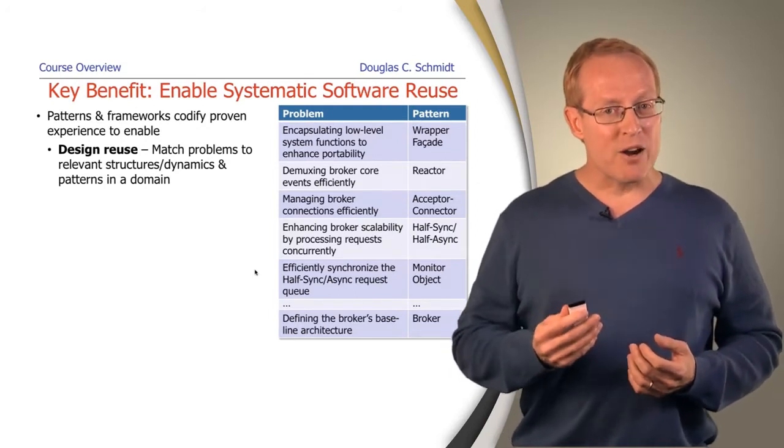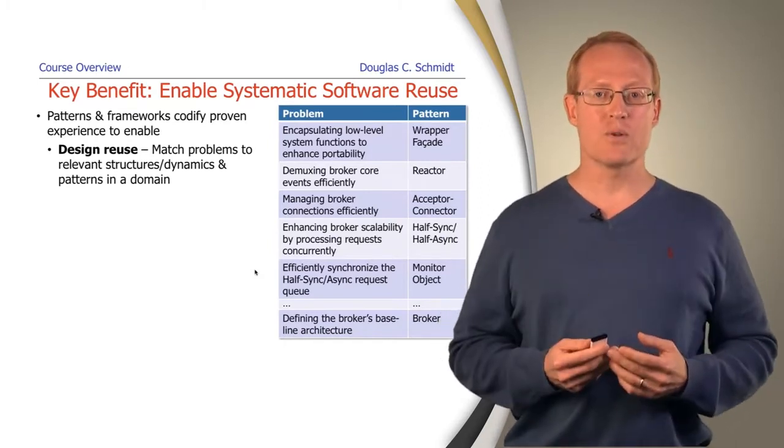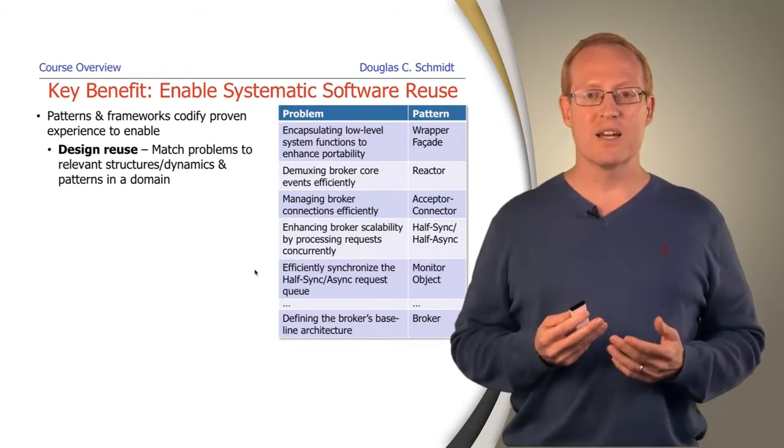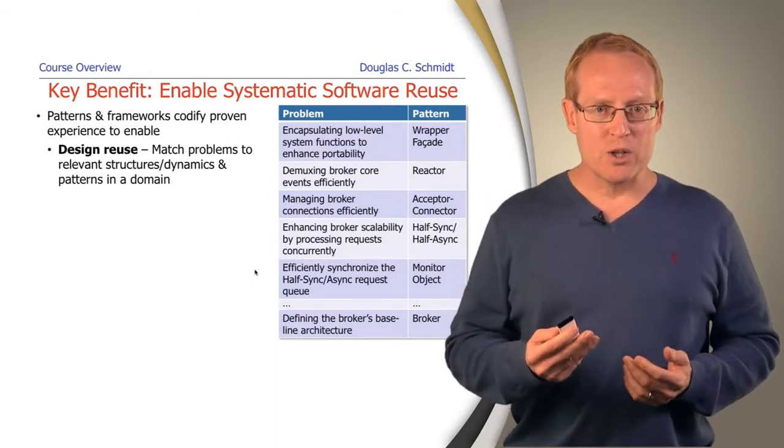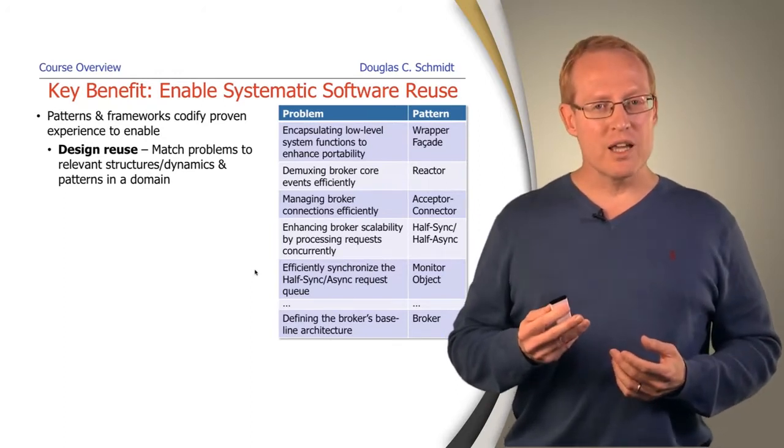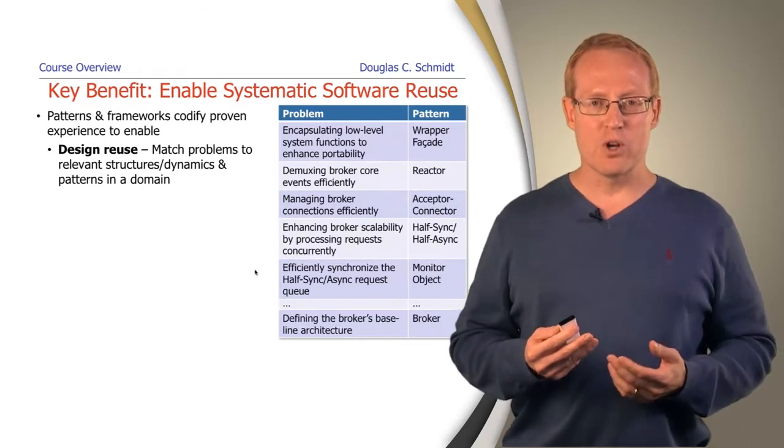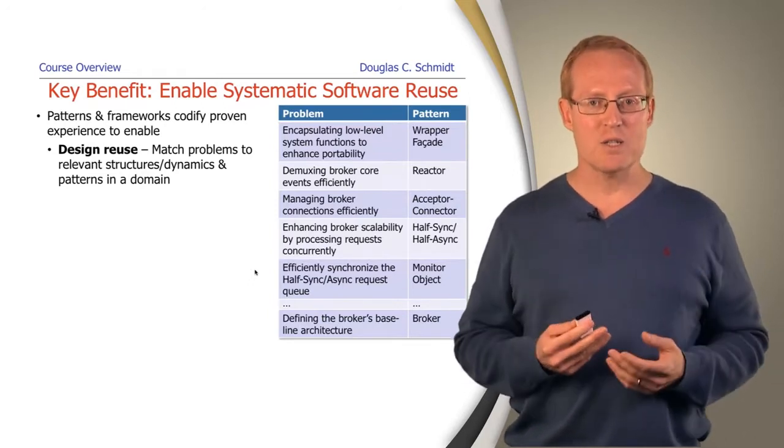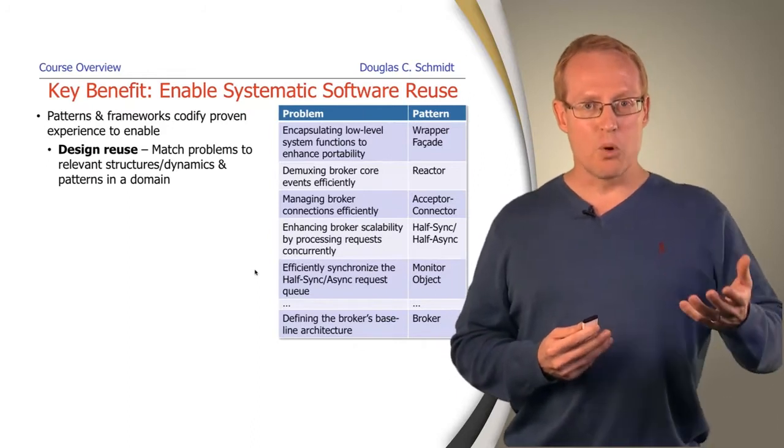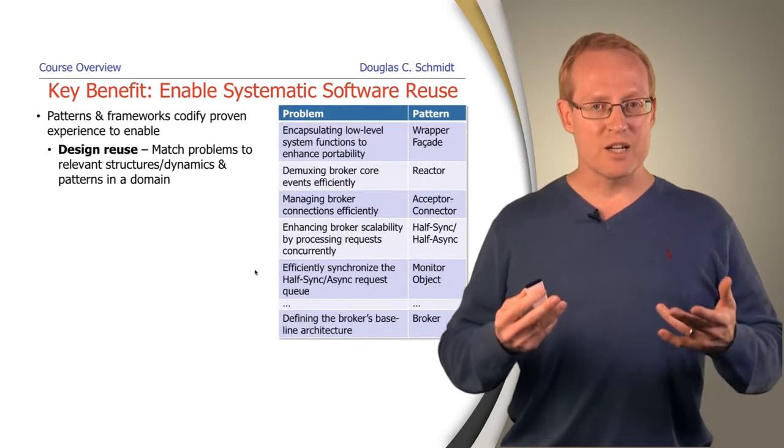Some of the things that patterns and frameworks do is they allow us to get both design and code reuse. The design reuse allows us to match problems to relevant structures and dynamics and patterns in a domain. For example, if you were planning to develop some kind of communication middleware, you might have to deal with a number of different problems, things like portability, event handling, connection management, concurrency and synchronization and so on.